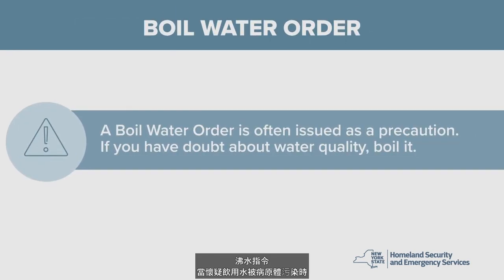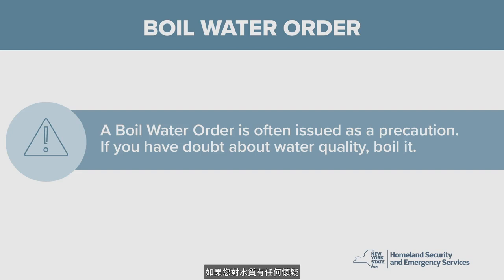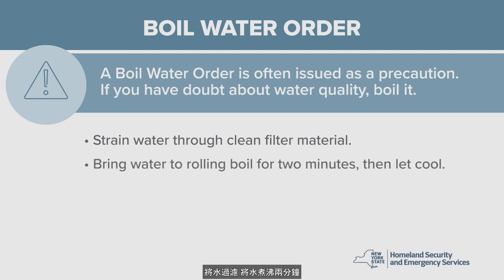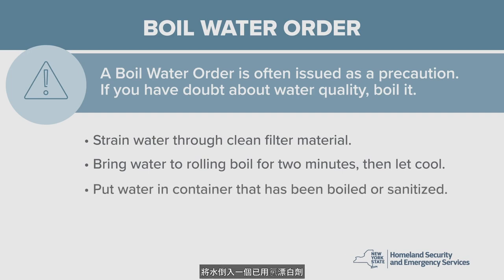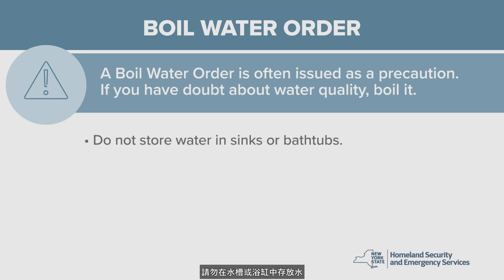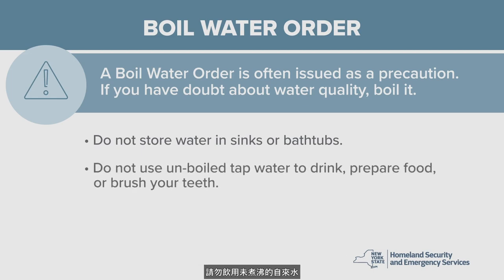A boil water order is often issued by local authorities as a precaution when drinking water is suspected to be contaminated by pathogens. If you have any doubt regarding the quality of your water, boil it using this method: strain the water through a cheesecloth, coffee filter, or another clean filter material. Bring water to a rolling boil for two minutes, then let cool. Pour the water into a container that has been boiled or sanitized with chlorine bleach and refrigerate until use. Do not store water in sinks or bathtubs. Do not use unboiled tap water to drink, prepare food, or even brush your teeth.